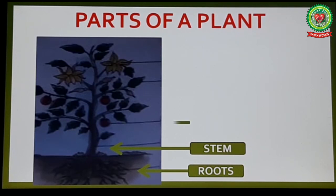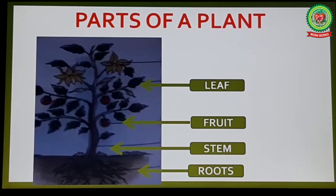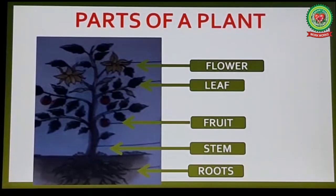This part of a plant is called fruit, and it contains a seed. This is called a leaf, and it is also called the kitchen of a plant. And lastly, this is a flower — it is a colorful part of a plant. So students, we have learned the different parts of a plant.